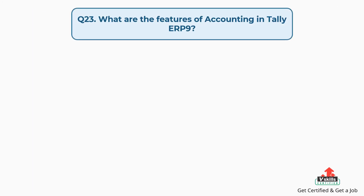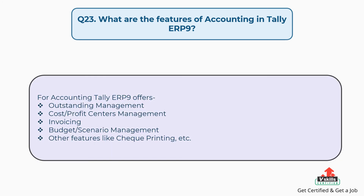Question number twenty three: what are the features of accounting in Tally ERP9? For accounting, Tally ERP9 offers outstanding management, cost or profit centers management, invoicing, budget or scenario management, and other features like check printing, etc.